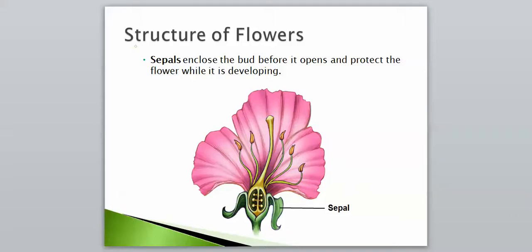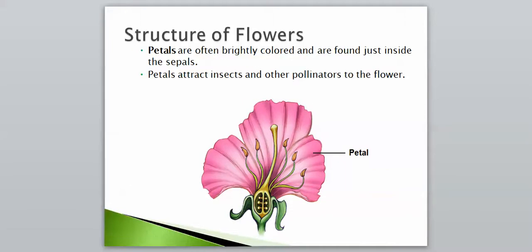Our next structure — the most obvious one — is the petals. These are often brightly colored and are found just inside the sepals. This is the most obvious one; we all recognize these. The petals' function is to attract insects and other pollinators to the flower. Pollinators, like bees, are going to be attracted to the bright colors, so that's the main function of the petals — to bring in those pollinators.